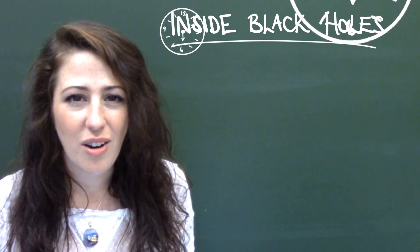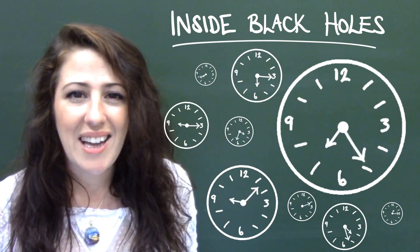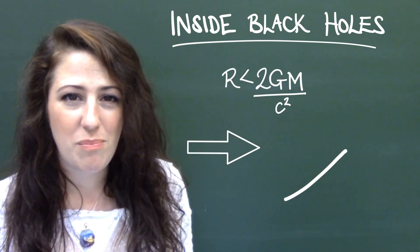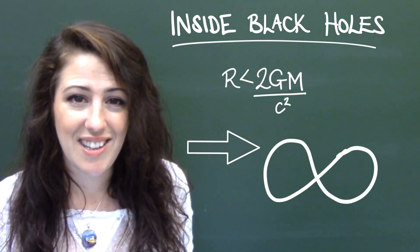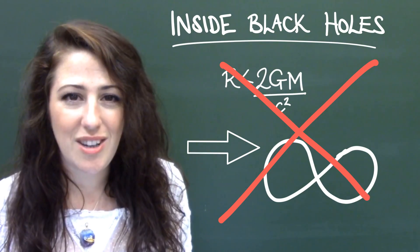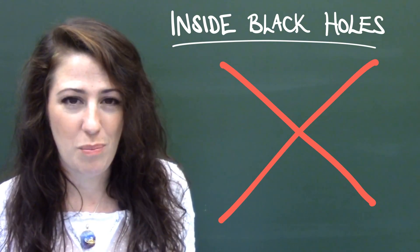Inside a black hole, time as we know it just doesn't make sense. And if we try to calculate this, we get 1 divided by 0, which equals infinity—we get a singularity. This means the maths and physics we use to understand the universe breaks down inside of a black hole.